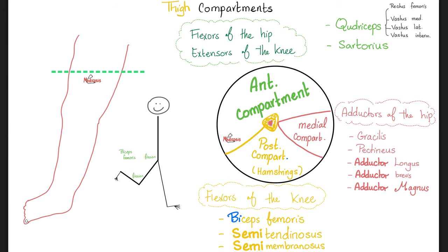The anterior compartment muscles include quadriceps and sartorius. The quadriceps is made of four muscles: rectus femoris, vastus medialis, vastus lateralis, vastus intermedius. The medial compartment consists of the adductors of the hip: adductor longus, adductor brevis, adductor magnus. And don't forget the graceful gracilis and the pectineus.